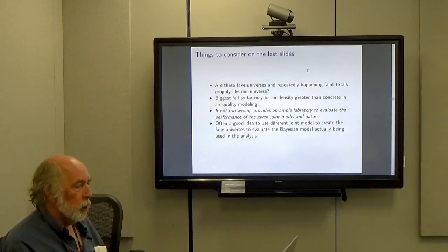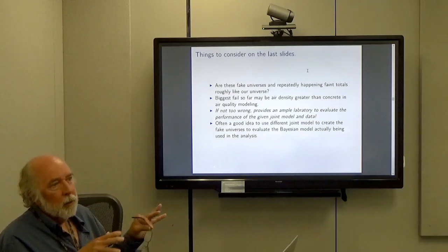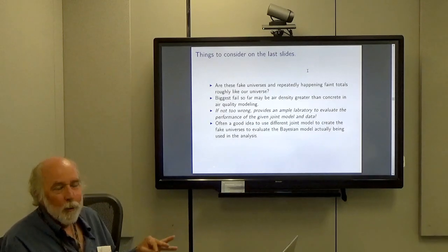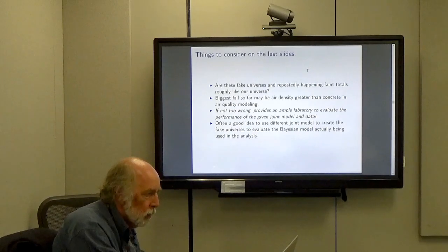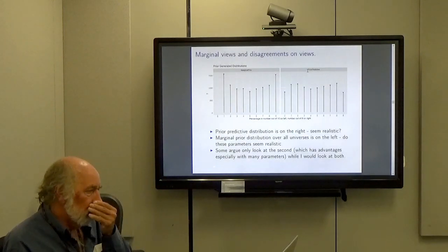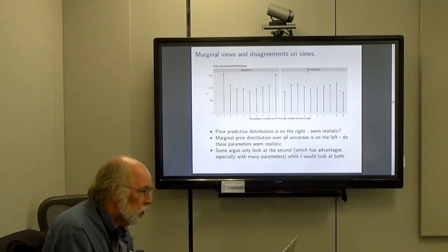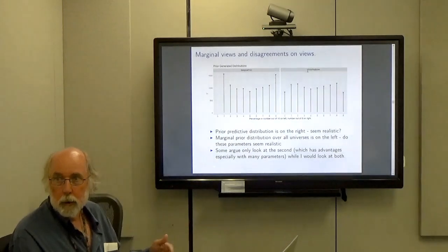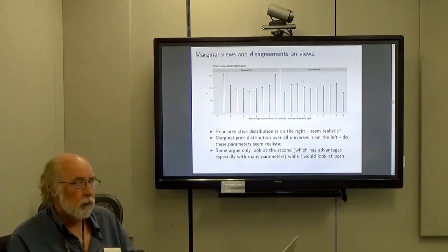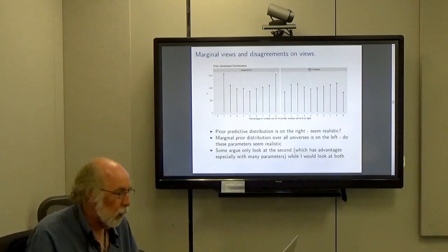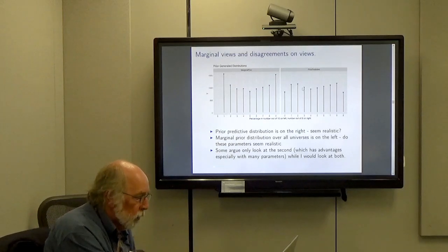If these fake universes are not too wrong, it provides an ample laboratory to evaluate the performance of a given joint model. That's sort of why you don't have to take anyone's word for it anymore. Often a good idea to use a different joint model to create the fake universes than to evaluate the Bayesian model actually being used in analysis, because we know we're going to get the fake universes not quite right. So now we're going to look at ways of viewing the fake universes marginally. The first one is to just look at the distribution of all parameters, all faint rates. You just collapse over the fake universes. That's the marginal prior. The other way is just to collapse all the observed faint totals. And that's the prior predictive.